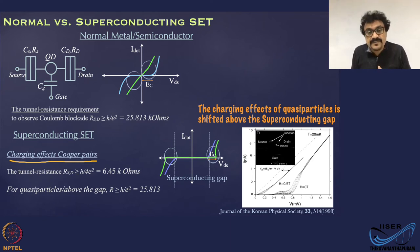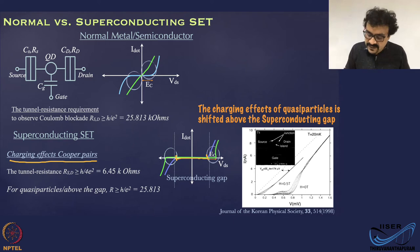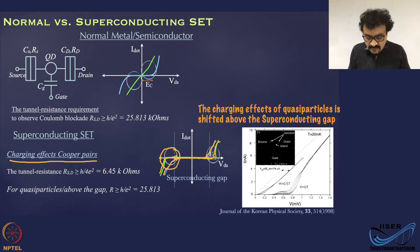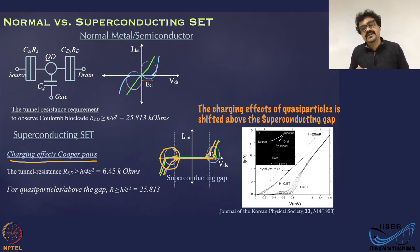The IV trace of a superconducting tunnel junction system also involves the superconducting gap. The generalized picture is: you have a middle blockade region due to the superconducting gap, then a rise in current. Above the gap, you can observe the Coulomb blockade of quasiparticles or electrons, which is where you have quasiparticles available. In the sub-gap region, you have other kinds of transport mechanism which involves Cooper pairs also.